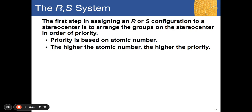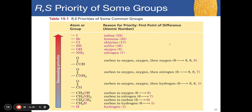The first step in assigning an RS configuration is to arrange the groups on the stereocenter in order of priority. Priority is based on atomic number — the higher the atomic number, the higher the priority. You may want to use your periodic table. For example, iodine has the highest priority among common substituents because it has the highest atomic number.